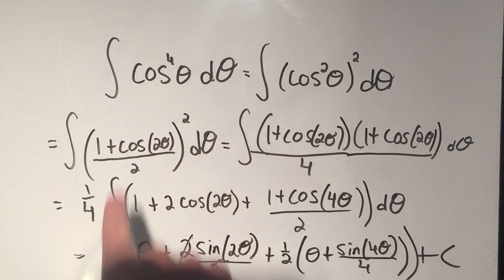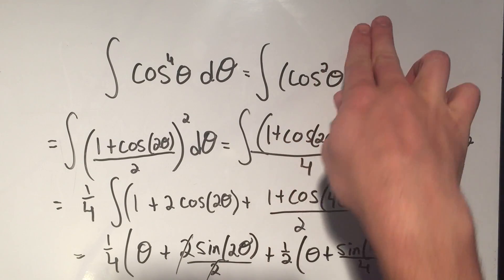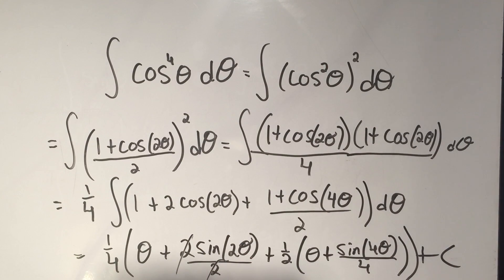So the trick is if you've got cosine to the fourth, you write it as cosine squared squared, and then you apply this half angle identity. Okay, I hope you got something out of this video. Please like and subscribe. I put new videos up almost every day. And thanks again for watching.